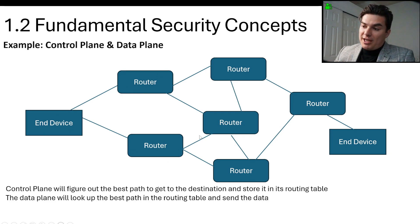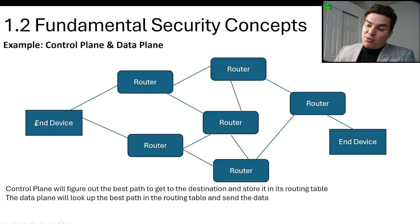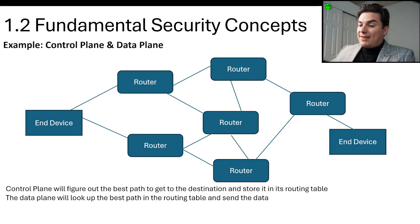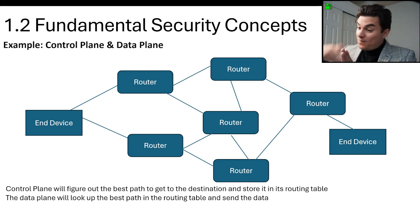If the data rates change, it may find a new path. The data plane is actually implementing the forwarding — when the router figures out the best path, it looks up the routing table via the control plane and sends the data. So the control plane determines the best path to the destination, and the data plane looks up that path and forwards the data.